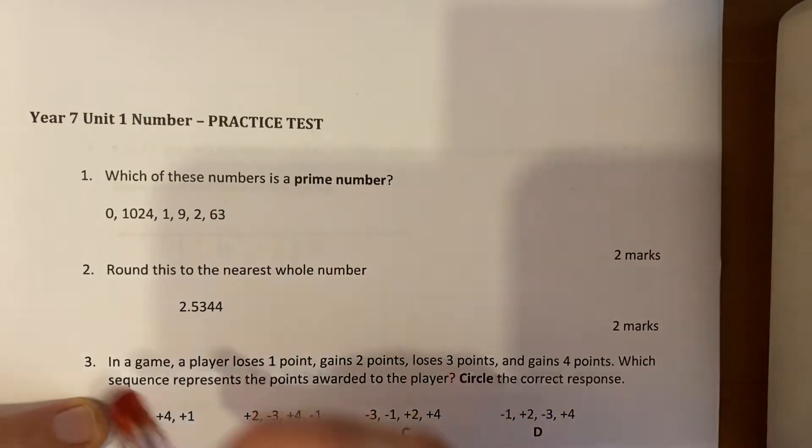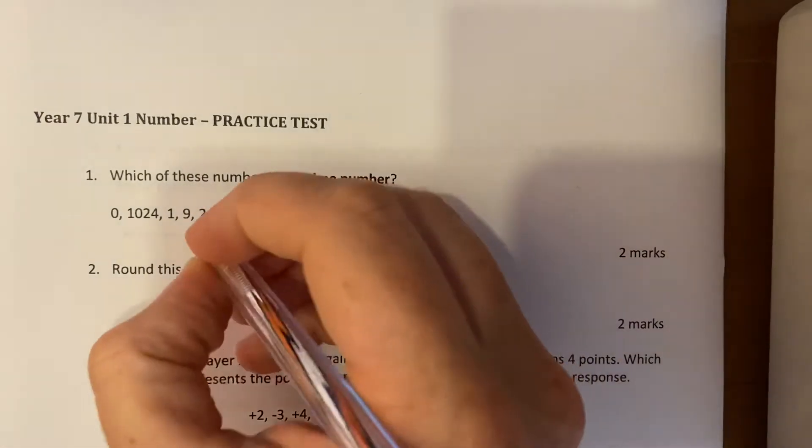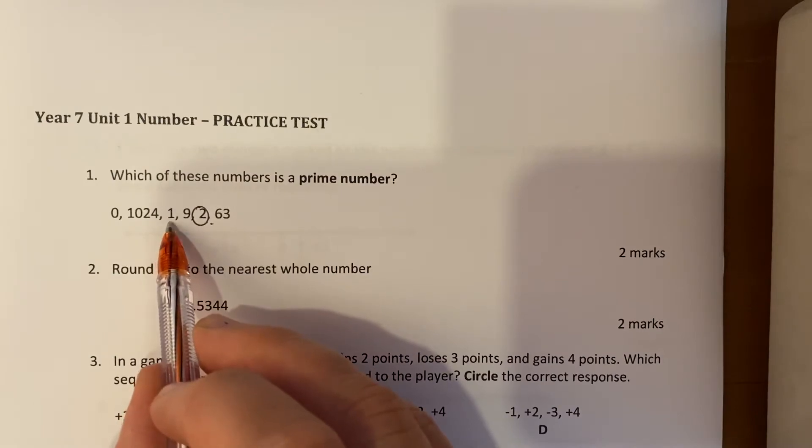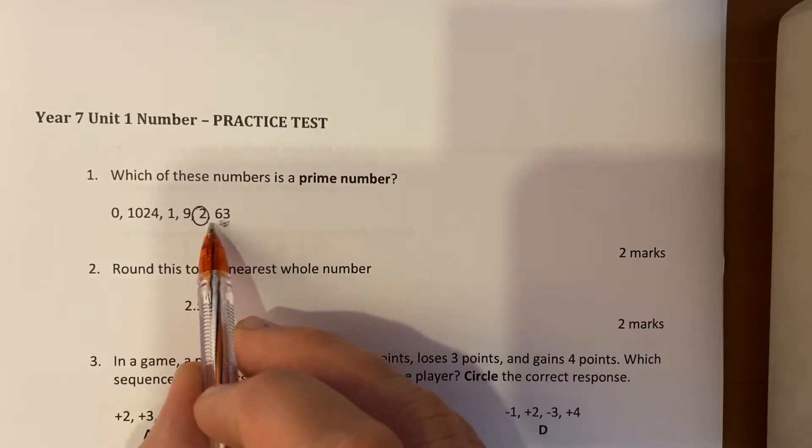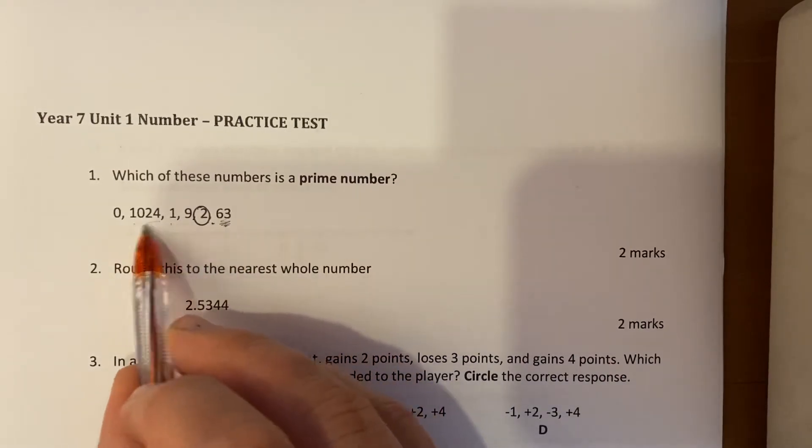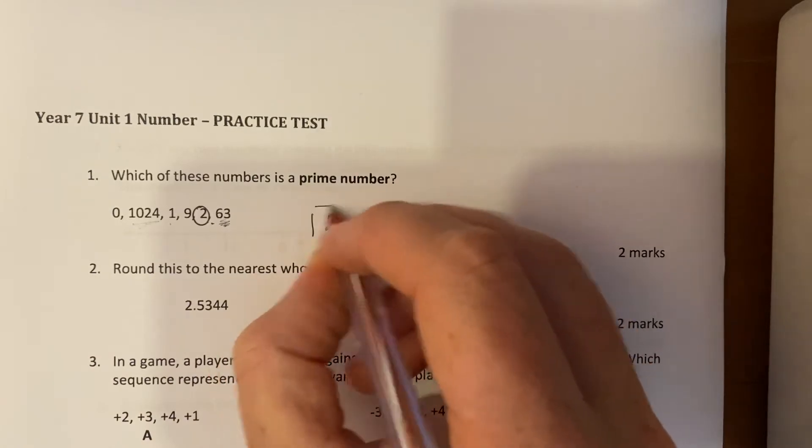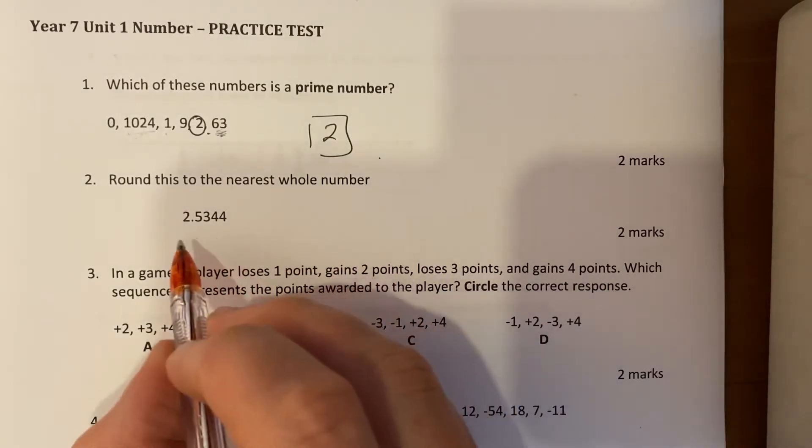Question one: which of these is a prime number? The only one here is two because one has got one factor, this has got more than two factors (seven and nine, sixty-three and one for example), this can be divisible by two so it also has more than two factors, and this technically has no factors. So two is the only prime number.